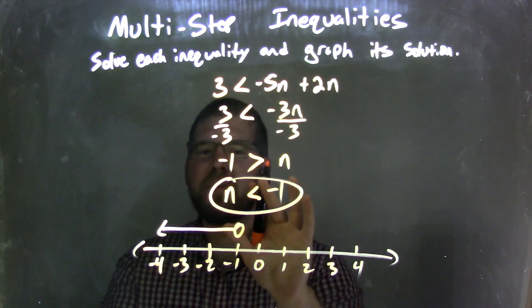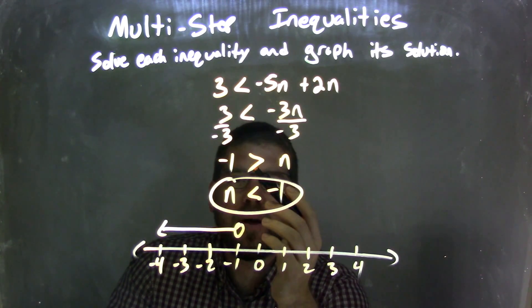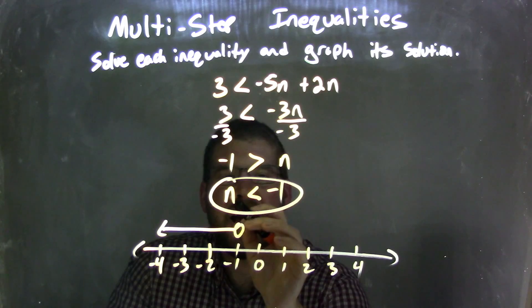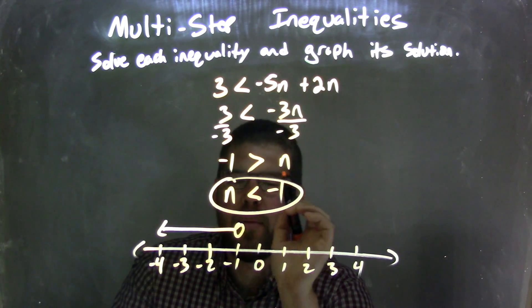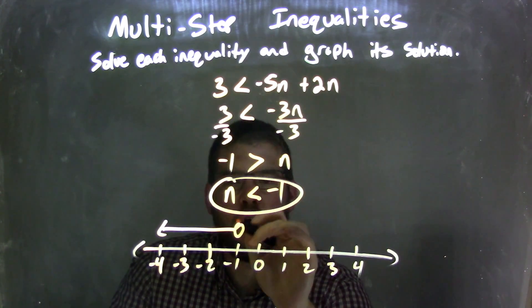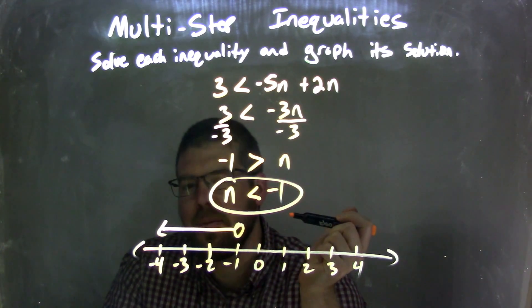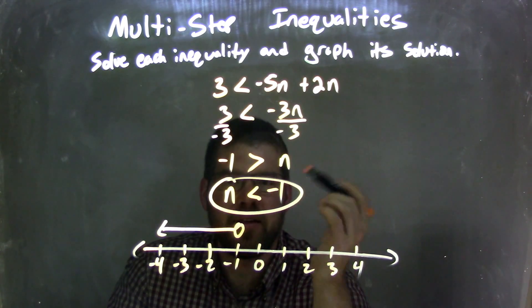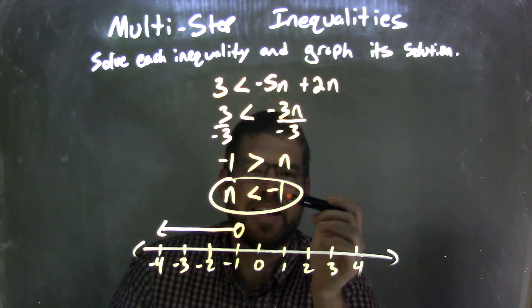Then I needed to write this as n from first. So negative 1 is greater than n. It is the same thing, same set of numbers, that n is less than negative 1. But now I have n written first. It's an open circle, because it's not equal to. And less than sign makes it shade to the left. And so this graph matches the final answer, which is n is less than negative 1.